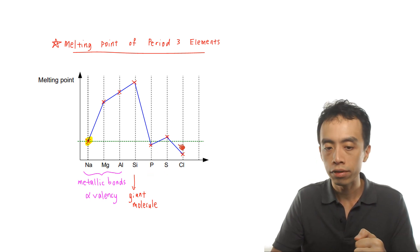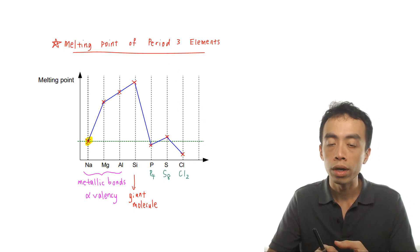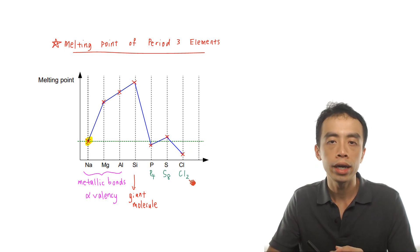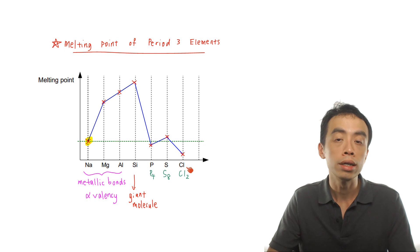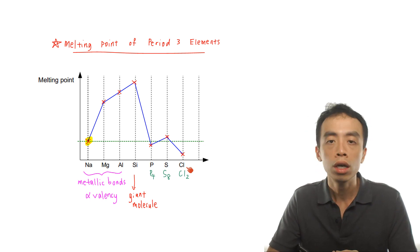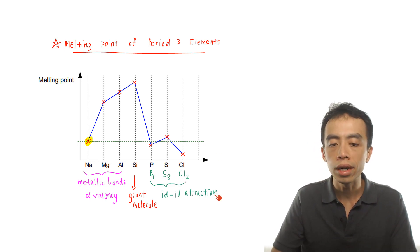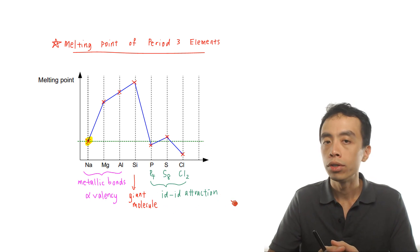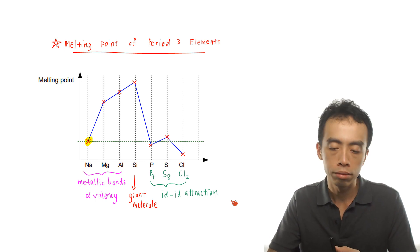Moving on to phosphorus, sulfur, and chlorine. The molecular formulae for these simple molecules are P₄, S₈, and Cl₂. These three elements exist as simple molecules and since all of them are non-polar, the dominant intermolecular interaction is instantaneous dipole-induced dipole interaction, also called dispersion forces or van der Waals forces — the attraction between non-polar simple molecules.